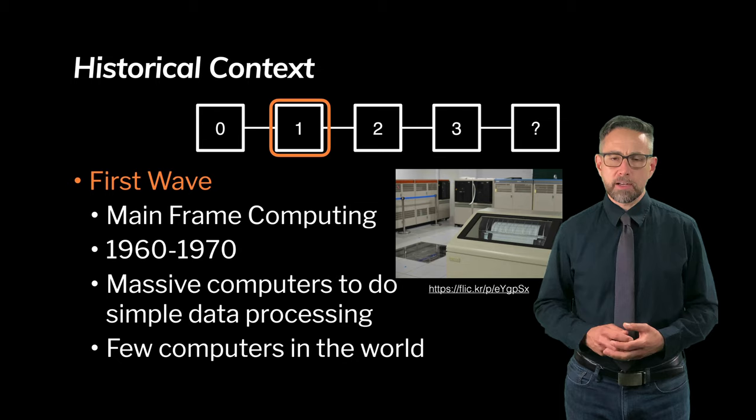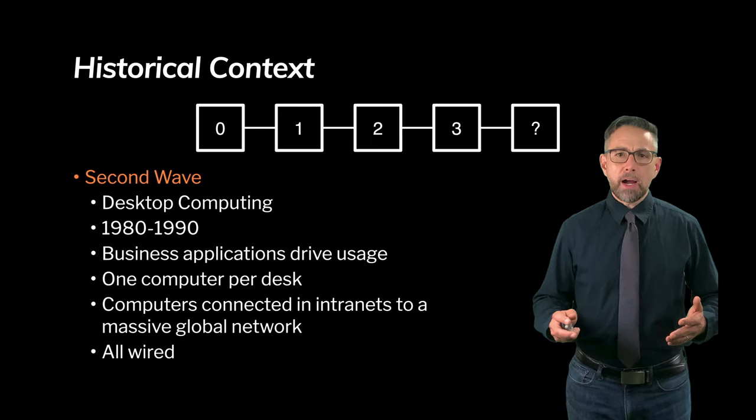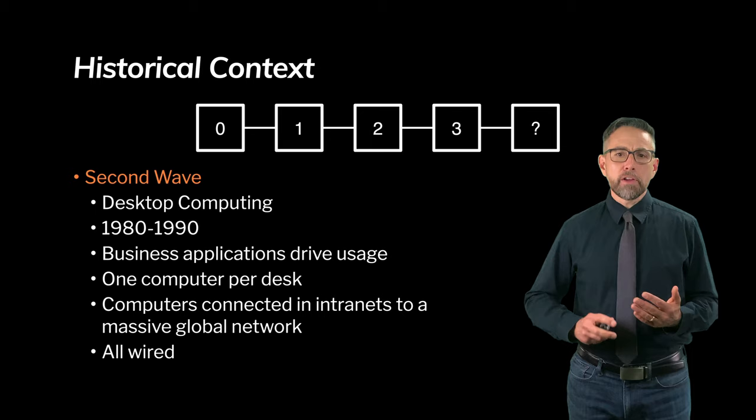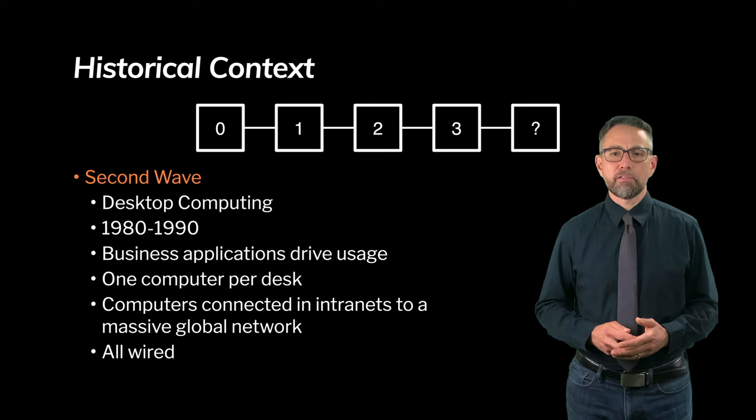Weiser indicated this would be the beginning and then predicted that the second wave would come around. The second wave which we eventually came to know is desktop computing, roughly the time frame from 1980 to 1990, a time when Microsoft really came to the forefront as a massive global corporation that did computing. What drove it were business applications. These were the primary applications of the desktop computer and the vision would be that there would be one computer per desk.